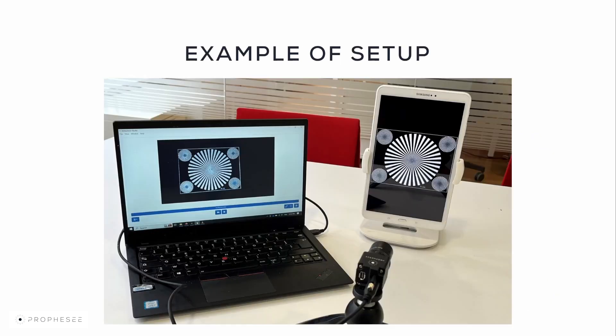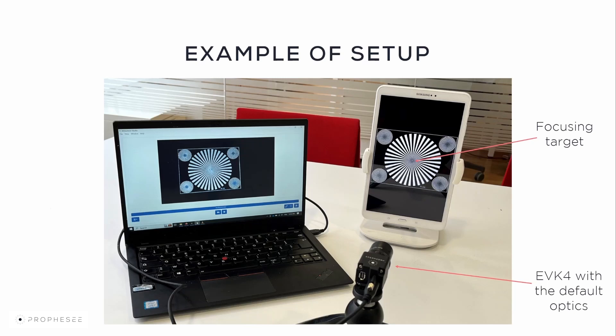Here's an example of a setup. The EVK4 is used with the default optics. It's placed in front of the focusing target — a blinking star pattern shown on a display. Here you can see the data acquired by the EVK4 and visualized by the MetaVision software.